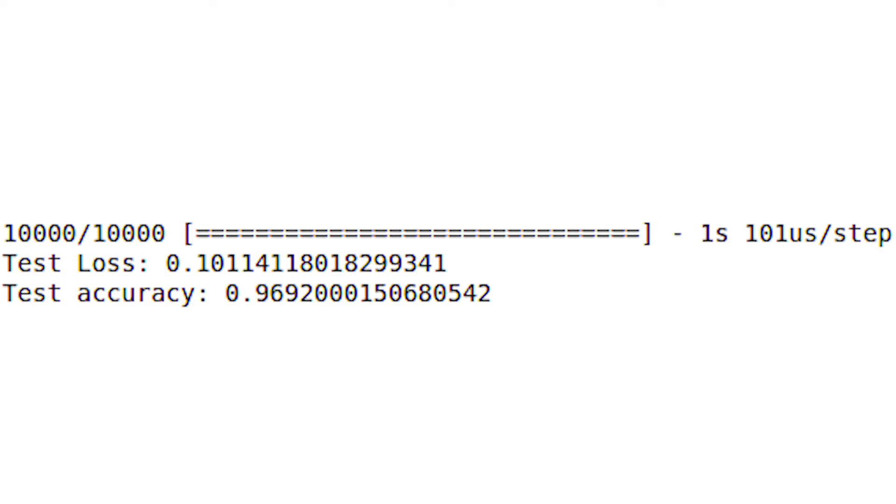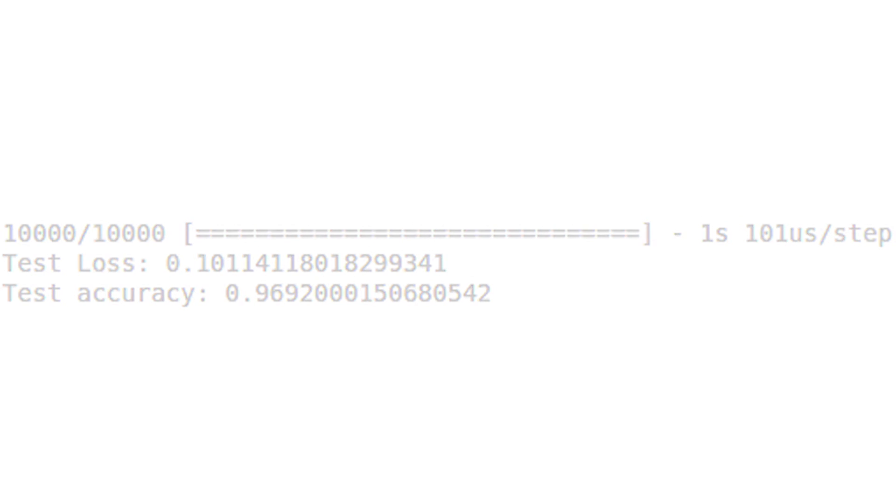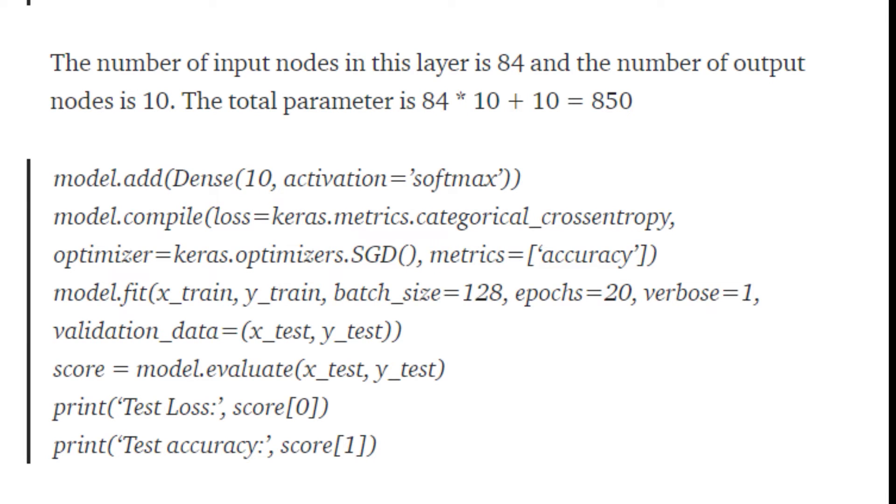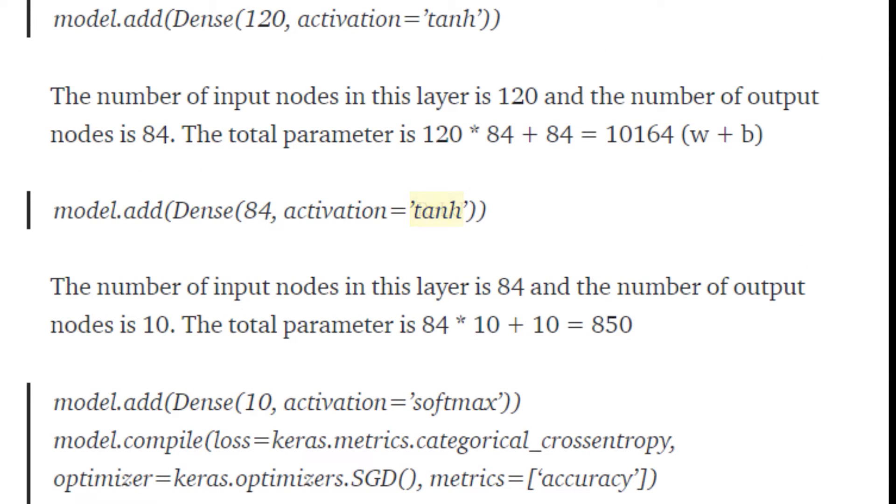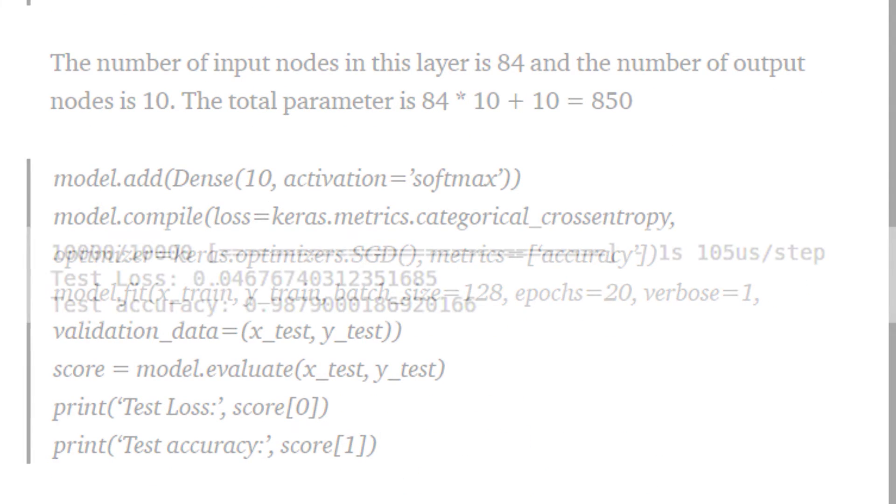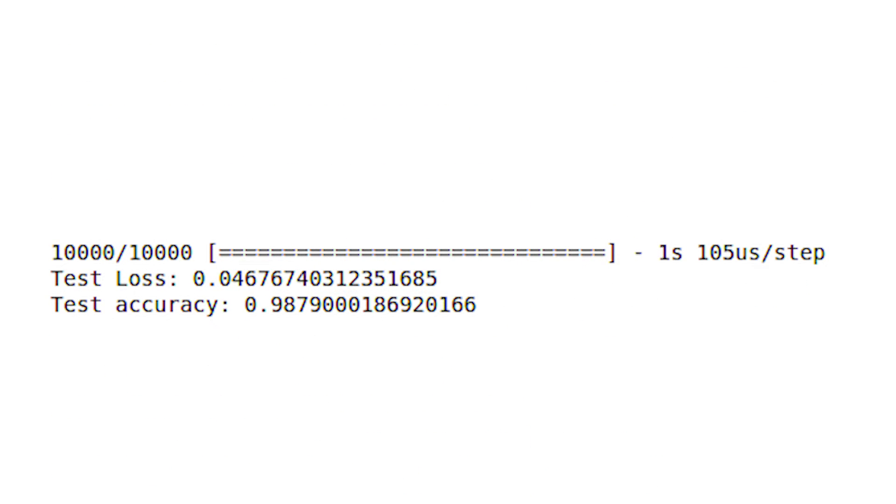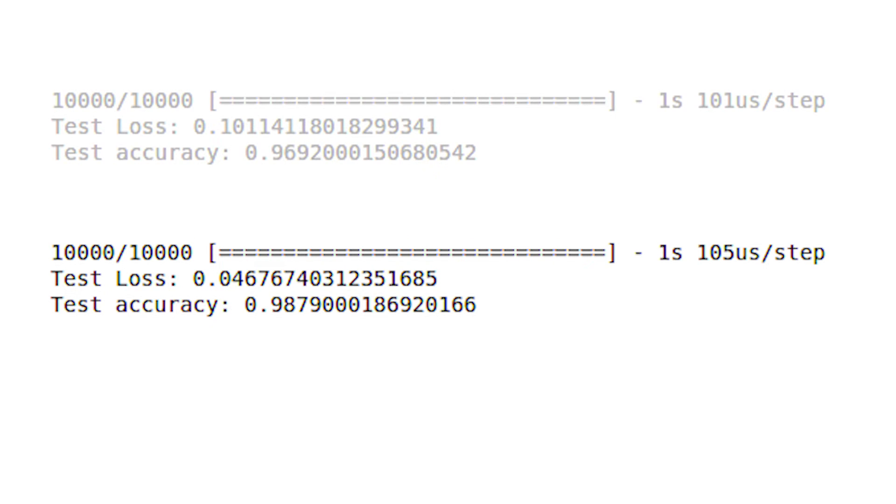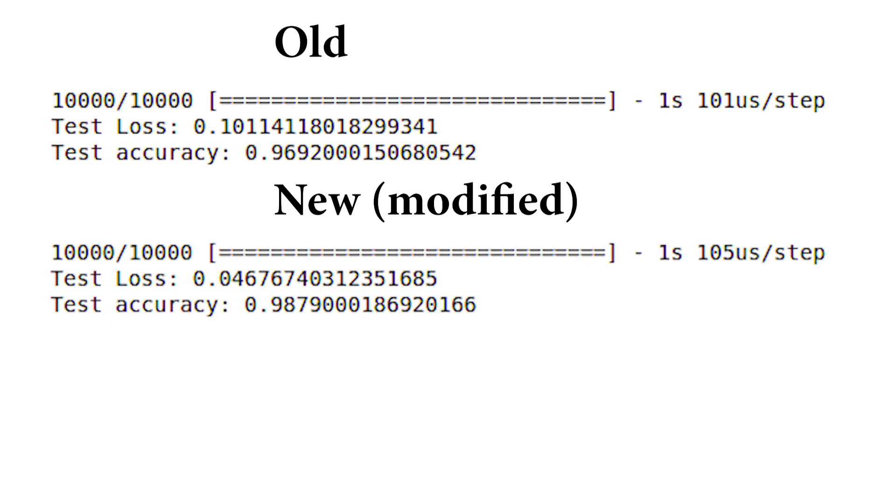We can modify it with current activation functions and optimizers. We can use Adam optimizer and ReLU activation function, which is better than the previous one. Here you can see the result of the new LeNet architecture. We can compare both outputs. There wasn't much difference, but the new one was slightly better.